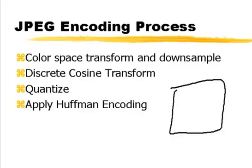The JPEG encoding process is phenomenally complicated. It begins with a color space transform and downsampling. There are different ways of representing color — we've spoken about RGB, which is red, green, and blue, but for printing you use CMYK, which is cyan, magenta, yellow, and black.